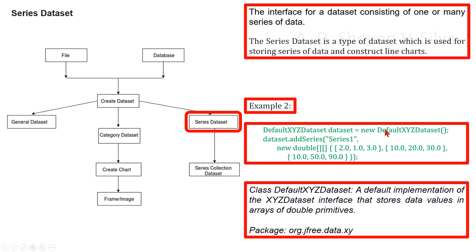Here, the class DefaultXYZDataset is the default implementation of the XYZ dataset interface that stores data values in arrays of double primitives. The addSeries method adds a series.